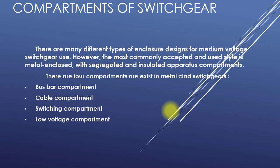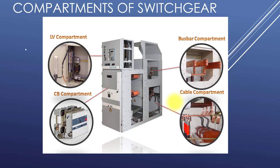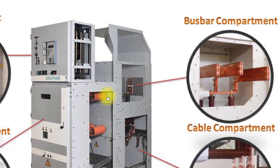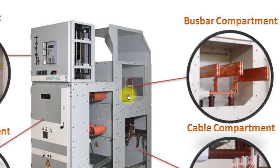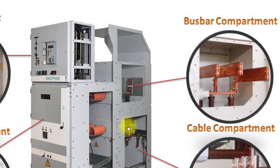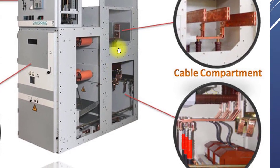Let's see how these compartments look. In this picture you can see the four compartments of MV switchgear. This is a metal enclosed design — you can see the bus bar, the post insulator, and this snapshot is of the bus bar compartment. All the buses of different panels are joined together through this compartment.